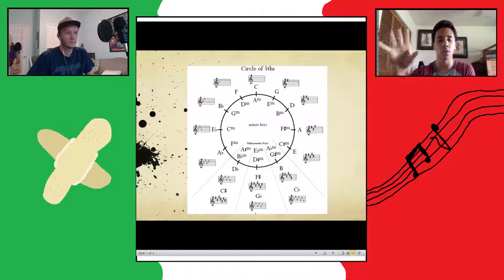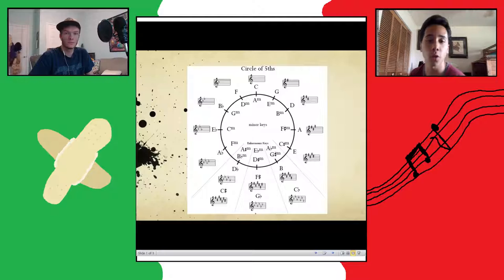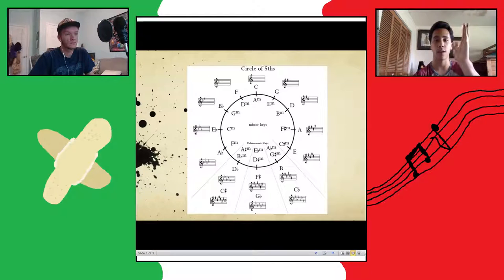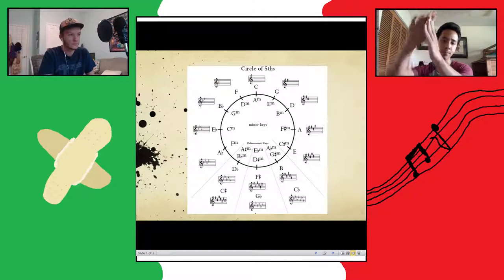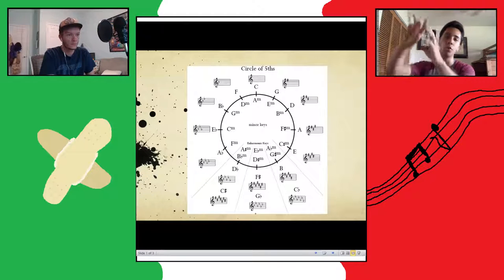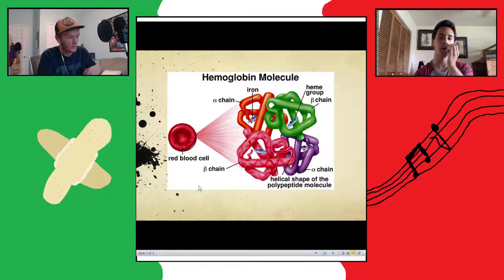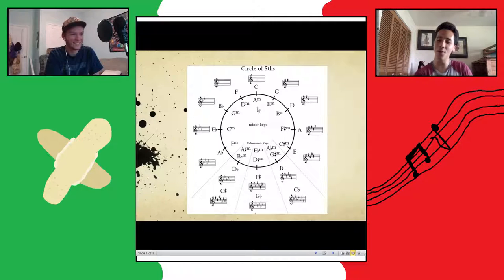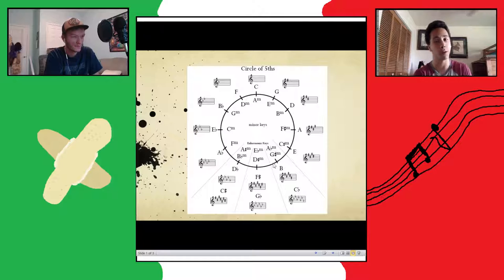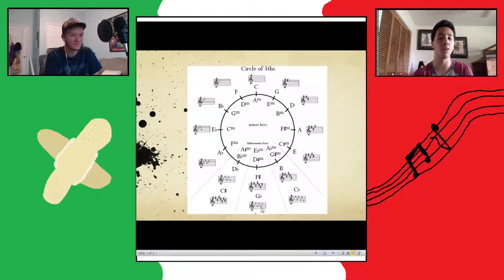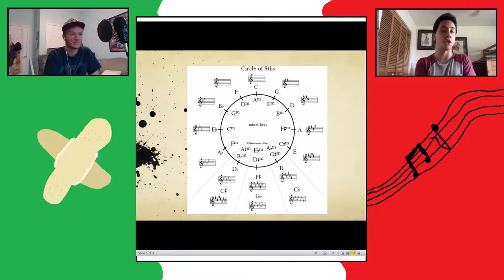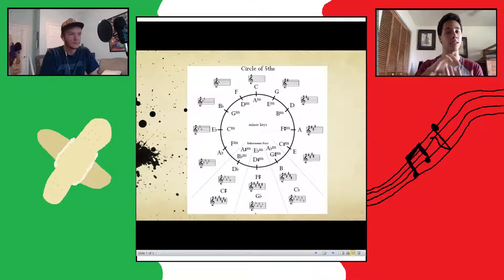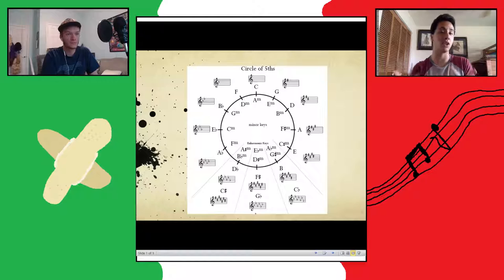So as you can see on the diagram, there's actually key signatures as you move around this circle. And as you're moving around, depending on which direction you're going, there's actually a pattern happening with the key signature. So for example, if you start in the middle here with C, the C major, as you move around it clockwise, you're adding a sharp until we get all the way down to F sharp, also known as G flat.